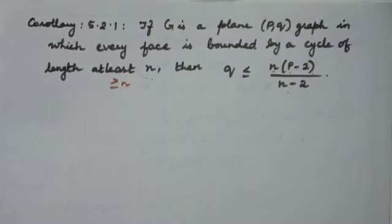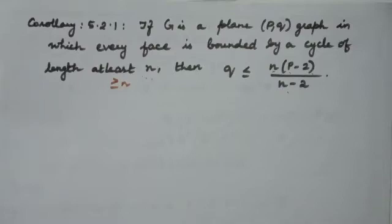Euler's formula is Theorem 5.1, and we can use it to prove this. Theorem 5.1 states that the sum of the degrees of the faces is equal to twice the number of edges. If you add the degrees of all faces, it will equal 2 times the number of edges, and we will prove it.